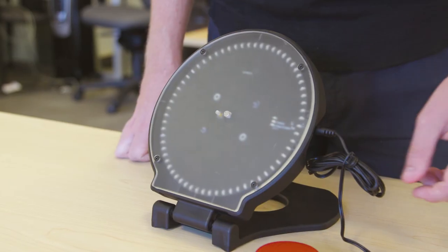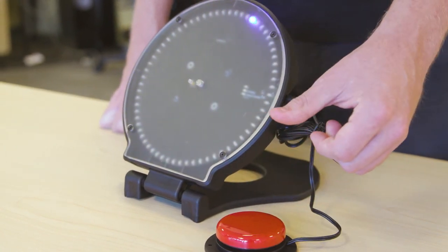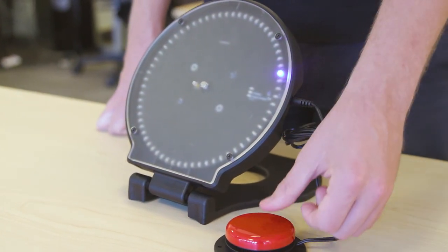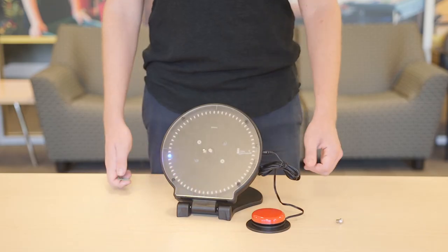In mode 2, the child holds down the accessibility switch so that the lights spin continuously. When the switch is released, the light stops at a random selection. This mode is similar to mode 1, but requires the switch to be held down.